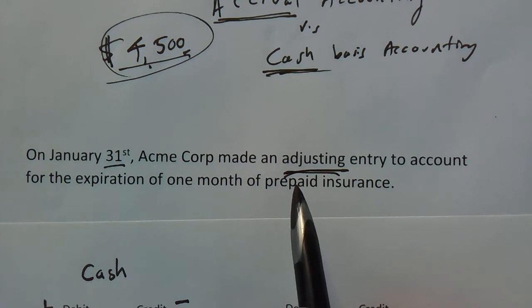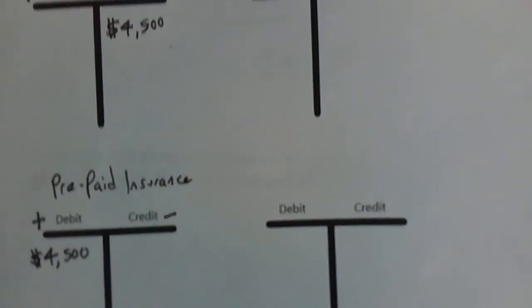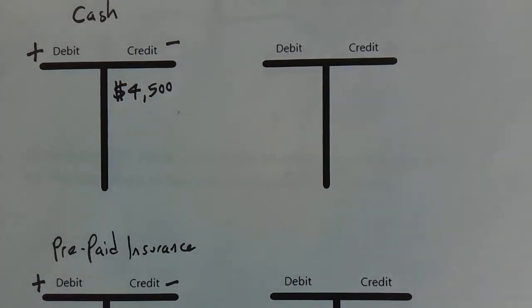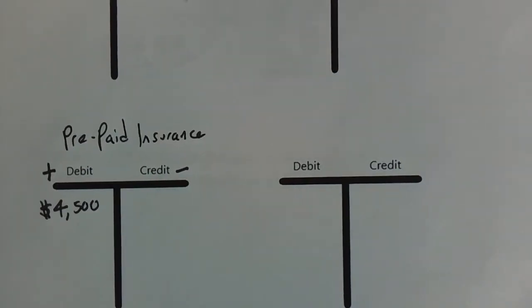It is a bookkeeping entry — that's really what it is. So we're sitting here with our T-accounts — we had already credited cash for $4,500, but we have $4,500 sitting in prepaid insurance.